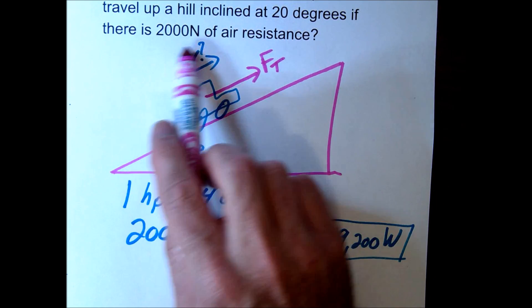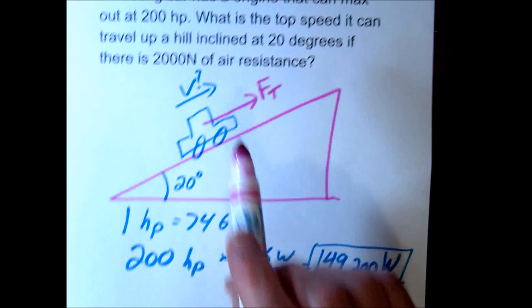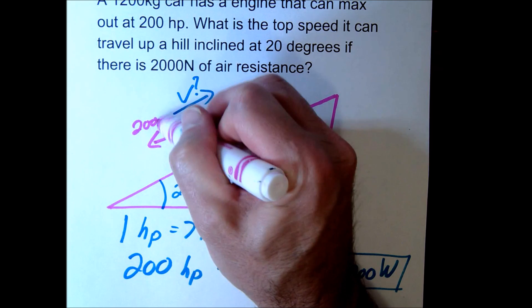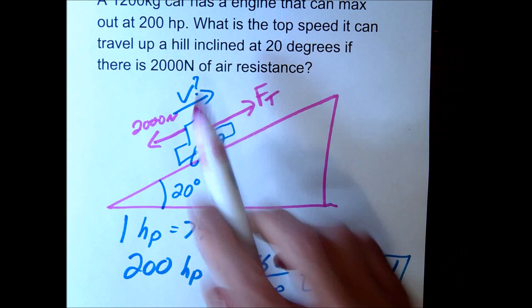Now there's a couple opposing forces. We have air resistance here, 2,000 newtons of air resistance. So it's going to go in the opposite direction, 2,000 newtons.